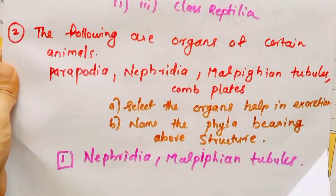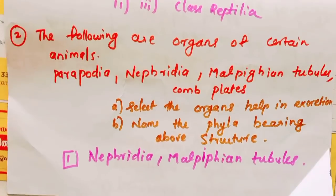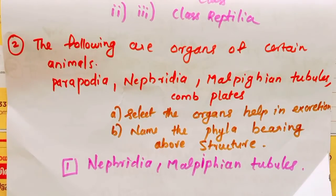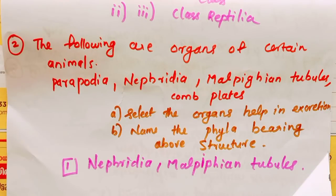The following are the organs of certain animals: parapodia, nephredia, Malpighian tubules, and coplates. Select the organs that help in excretion. Name the phyla bearing the above structures.